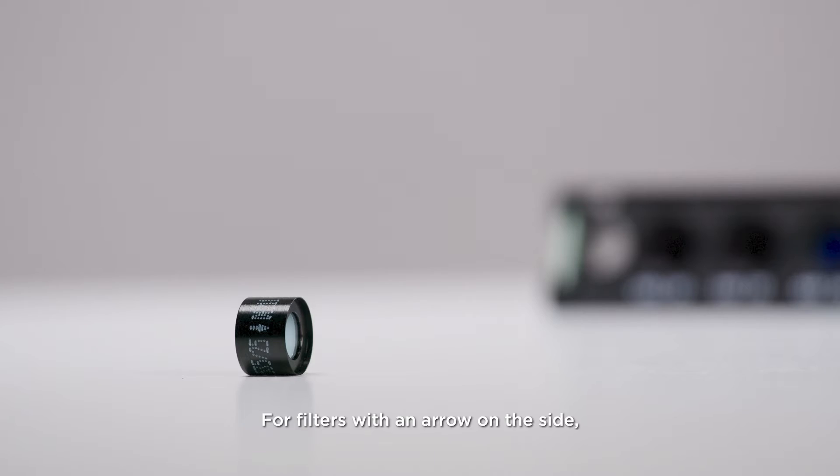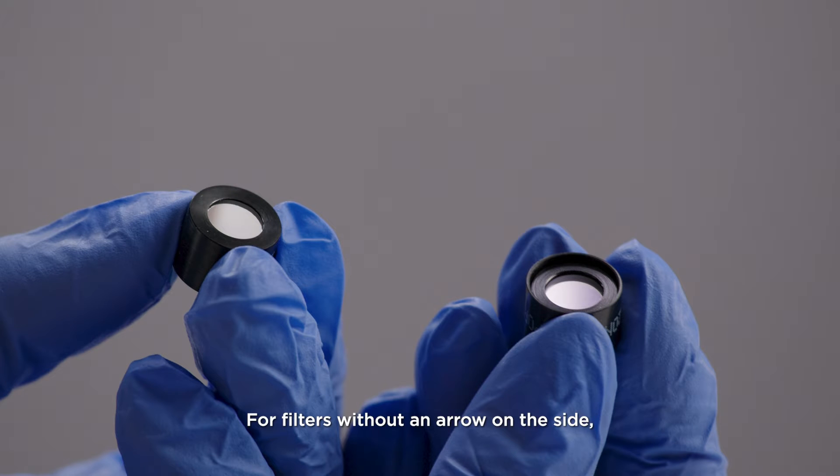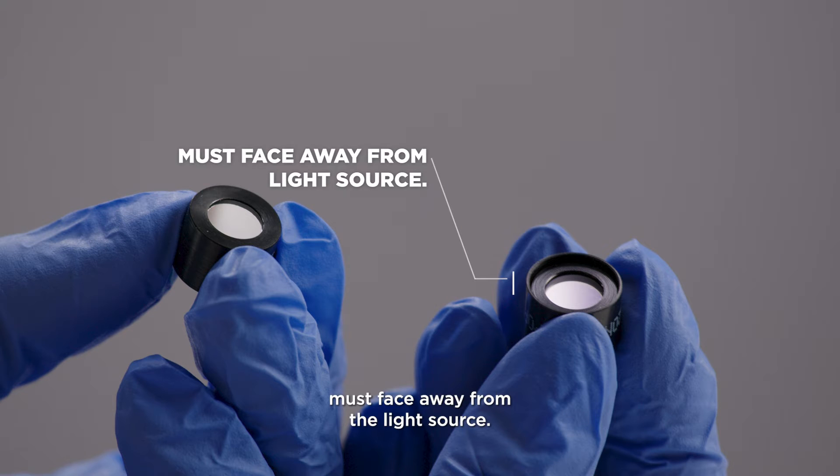For filters with an arrow on the side, light must travel in the direction of the arrow. For filters without an arrow on the side, the end of the filter with the metal lip must face away from the light source.